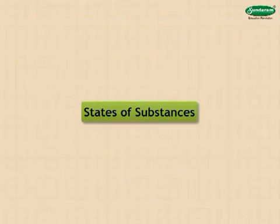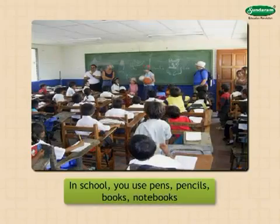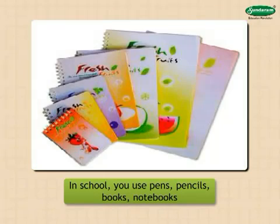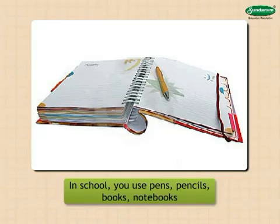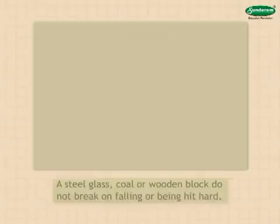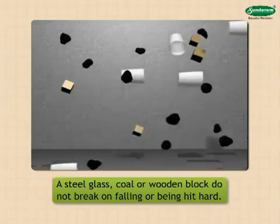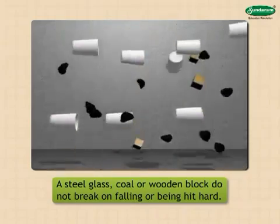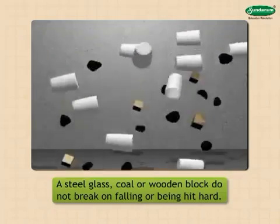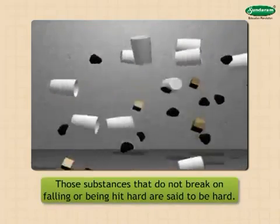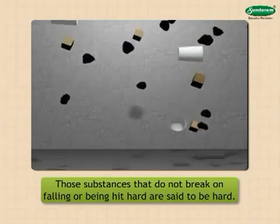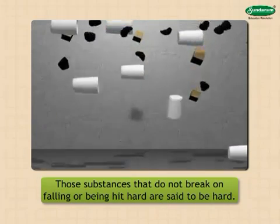States of substances. In school, you use pens, pencils, books, notebooks, etc. Hard substances: a steel glass, coal, or wooden block do not break on falling or being hit hard. Those substances that do not break on falling or being hit hard are said to be hard.